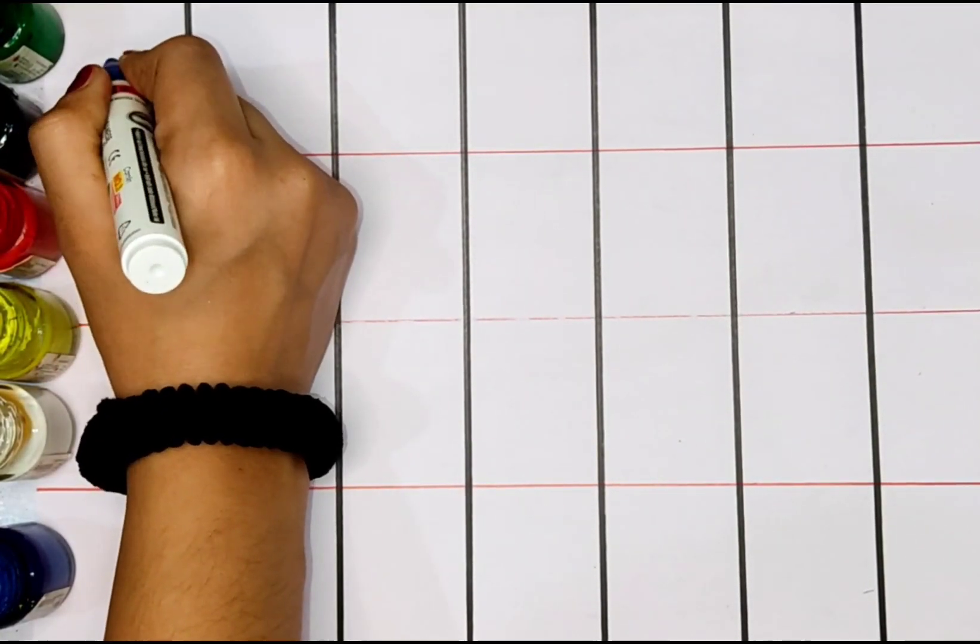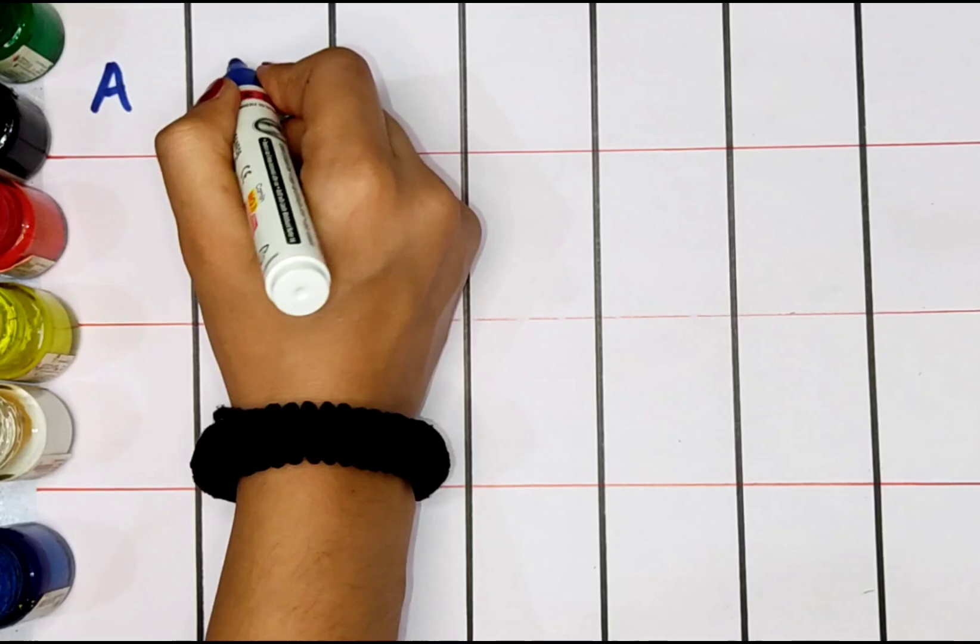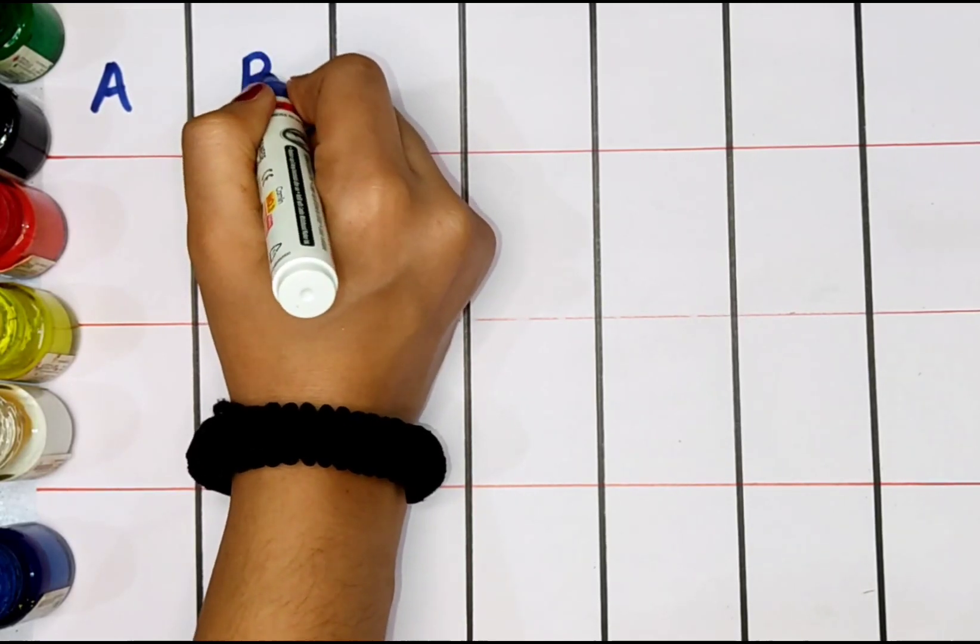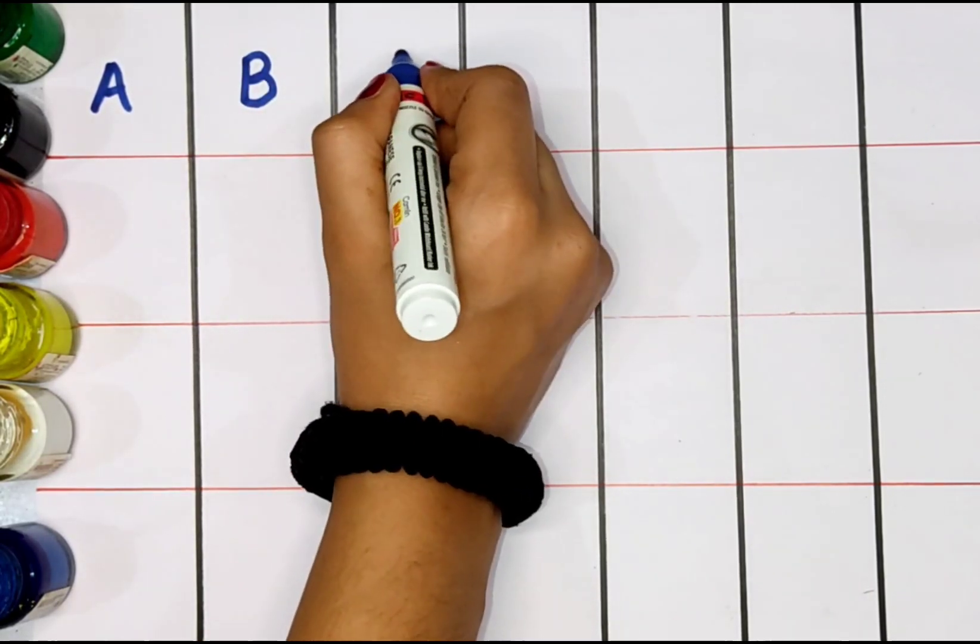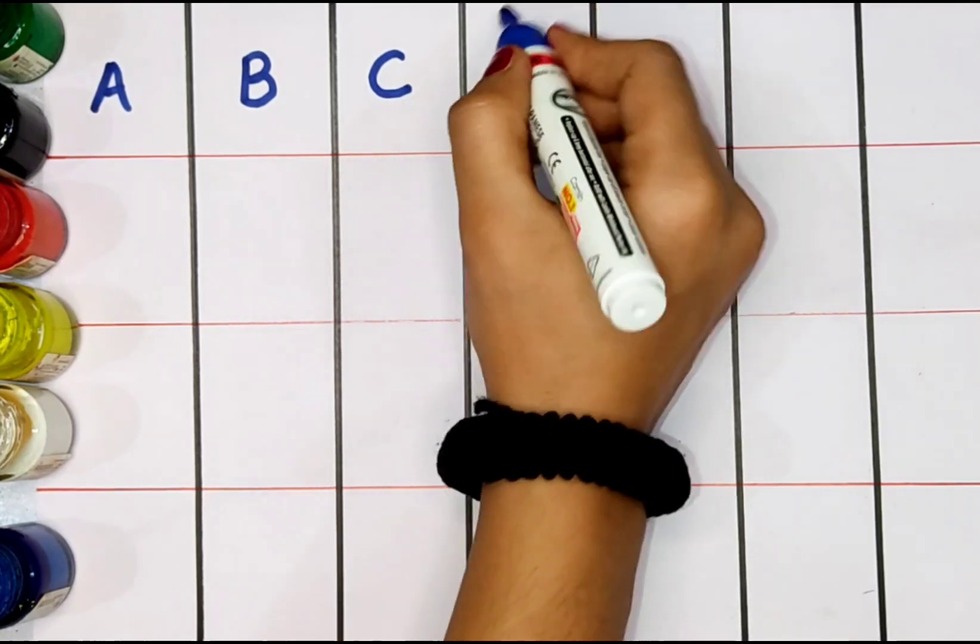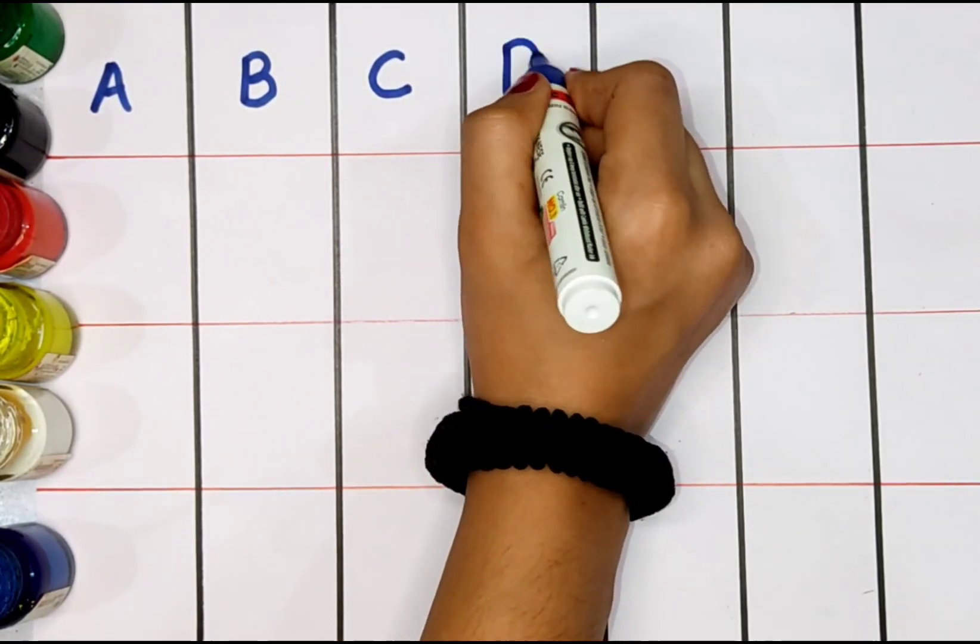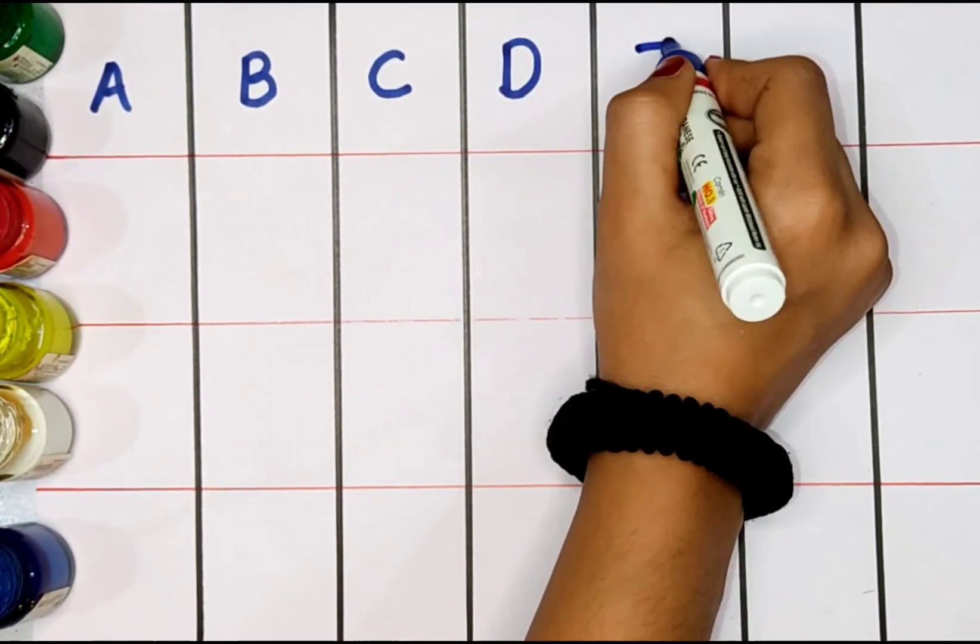A. A for apple. B. B for ball. C. C for cat. D. D for dog.